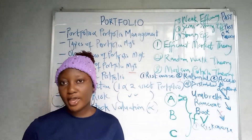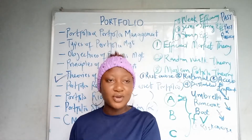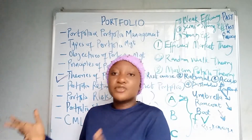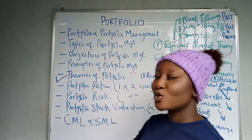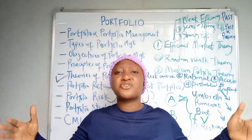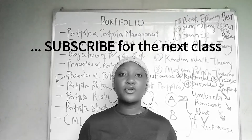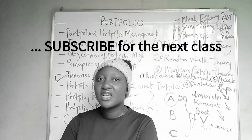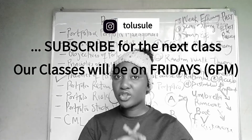Now we move into calculations — portfolio return. A one asset portfolio contains just one asset, while a two-asset portfolio has two or more assets, meaning you've invested in shares in multiple companies. For a one asset portfolio, there are three major methods for calculating portfolio return: the simple average method, the probability method, and the holding period method. The simple average method uses historical information to calculate return on a single asset portfolio.